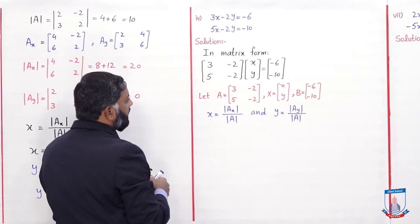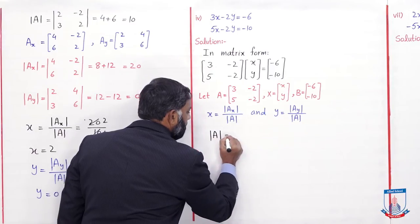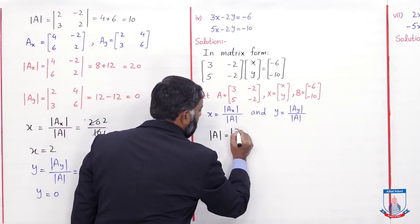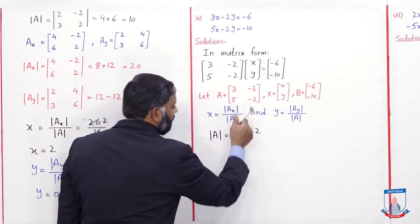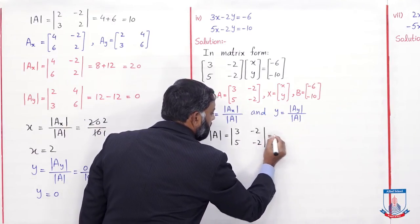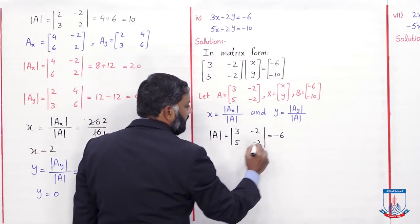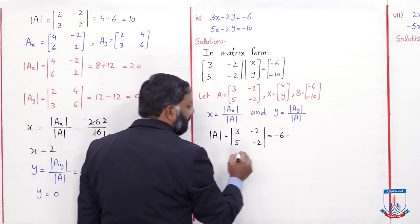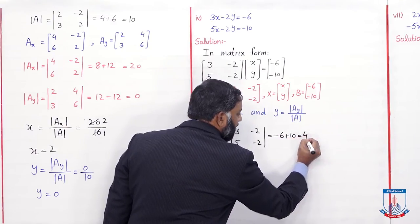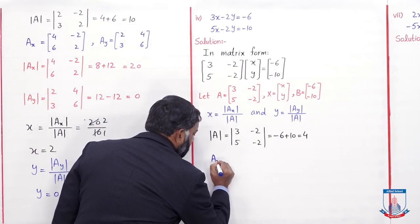Ab A matrix ko determinant ke symbol ke saath likhenge: [3, -2; 5, -2]. Solve karenge: diagonal entries ko multiply karein — 3 × (minus 2) = minus 6. Minus non-diagonal entries: minus 2 × 5 = minus 10, toh yeh plus 10 ho jaayega. 10 minus 6 = 4. Toh det(A) ki value 4 aa gayi. Ab Ax matrix likhenge.